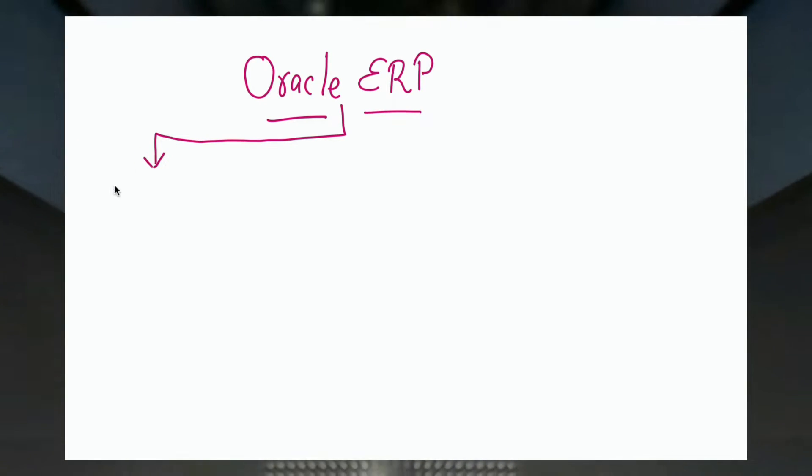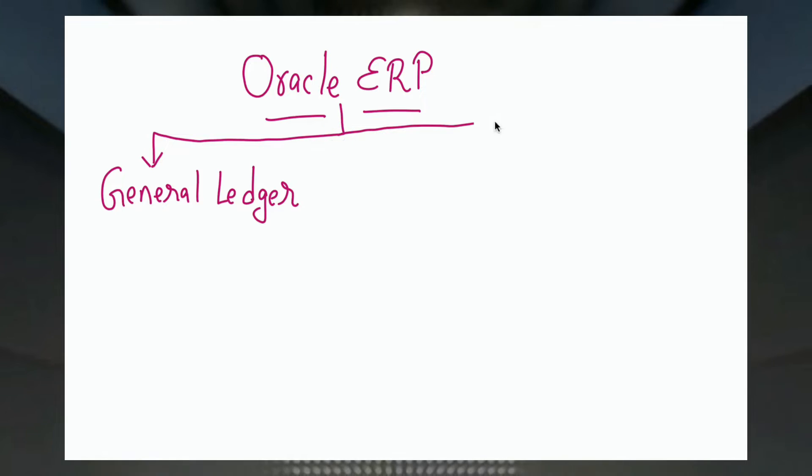Hi everyone, in this video we are going to understand about Oracle ERP. In a previous video I tried to explain what is ERP and what are the different processes in ERP, but in this video I am going to talk about Oracle ERP — what is journal ledger and what are sub-ledgers. These are two concepts used very much in Oracle ERP, and we will also understand the business processes involved. I will explain this with a practical example.